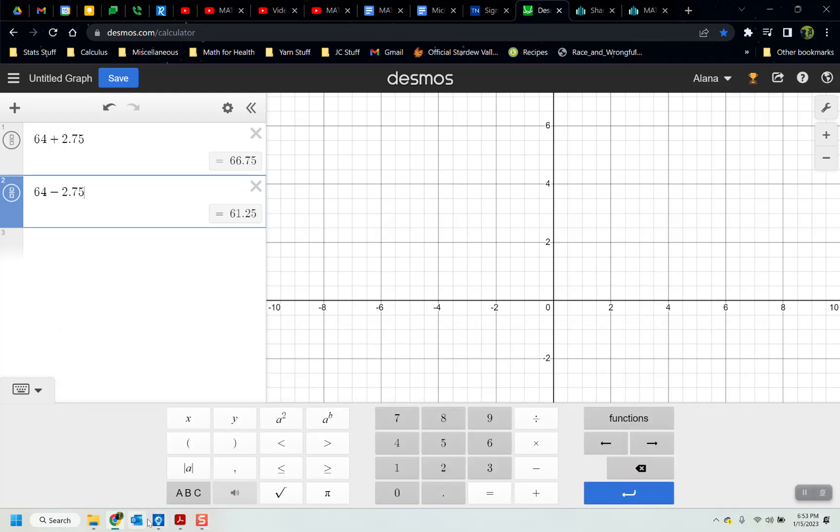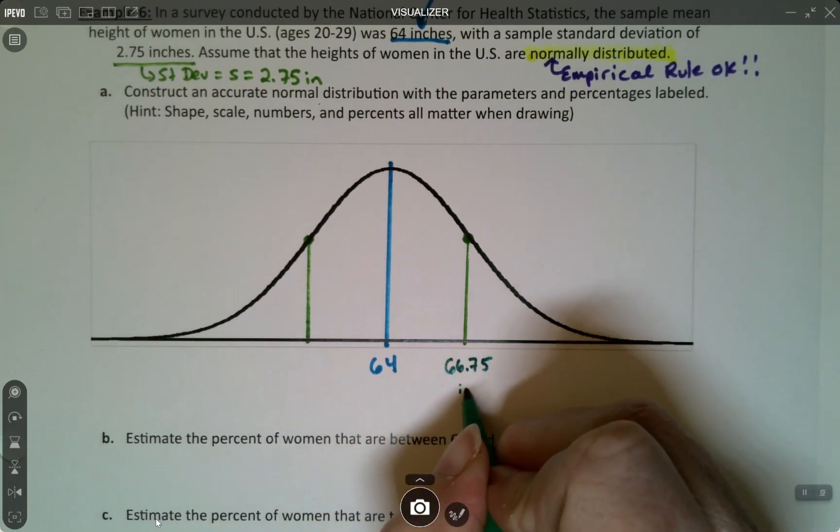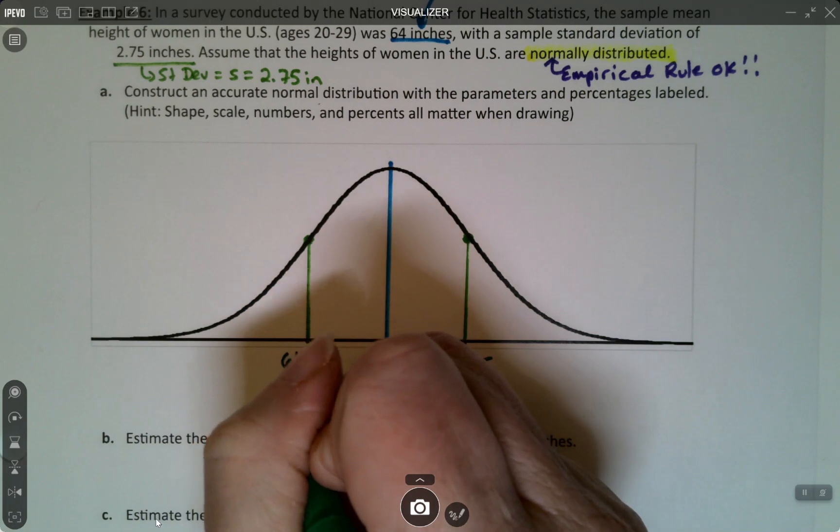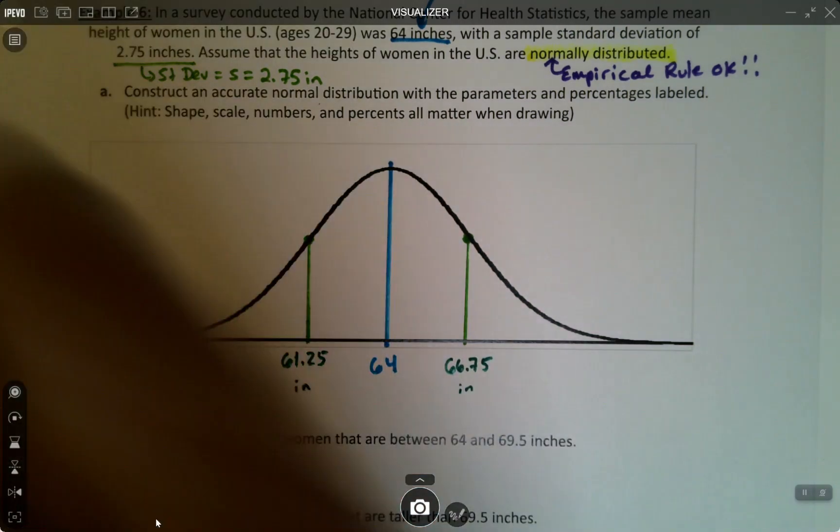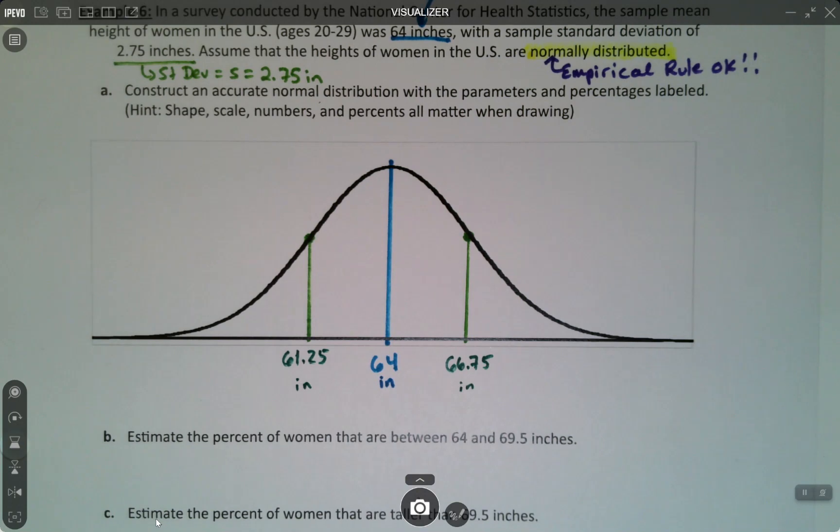So 64 plus 2.75 gets us 66.75. And then I can find the other one by 64 minus 2.75, and that gets me 61.25. So this is 66.75. Technically, these are all in inches. They all have the same unit as the data set.